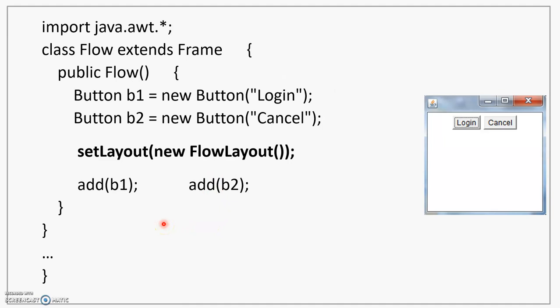Let's look at a program where we use this. Here we have a class which is extending Frame, meaning the container we are using is Frame. For the Frame, the default layout is BorderLayout. That is why, if in a Frame you want to use FlowLayout, then you must use setLayout and create an object of FlowLayout class and pass that as a parameter to the setLayout method. Within the constructor, two buttons are created, the layout has been changed, and then the buttons are added to the frame.